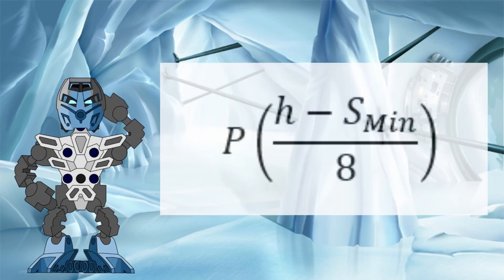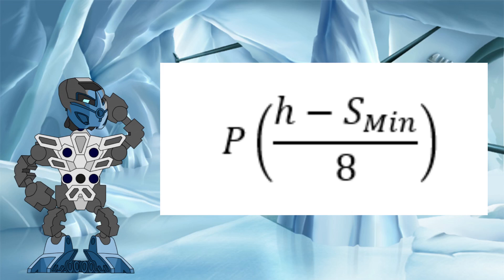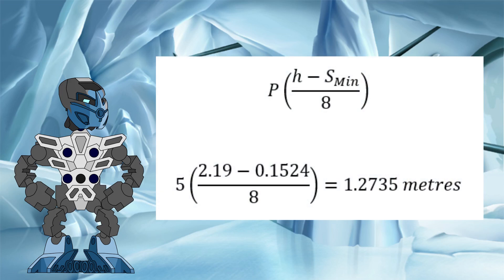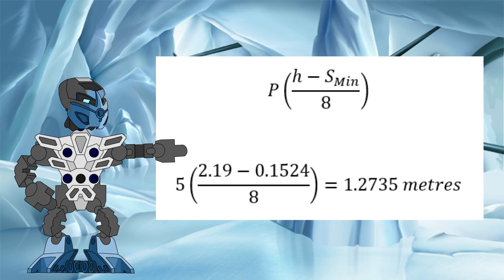We can show that by taking our equation so far and multiplying it by the power level of the disc, represented by the uppercase P. So, for a level 5 shrink disc, we can see that the resultant reduction in height would be 5 times 0.2547 meters, which equals 1.2735 meters.